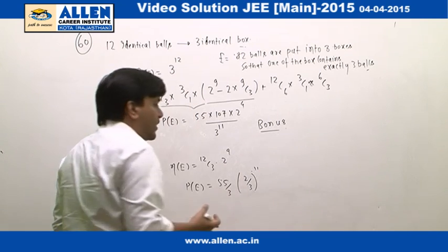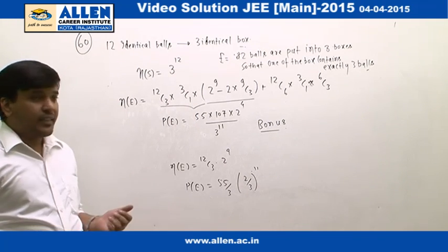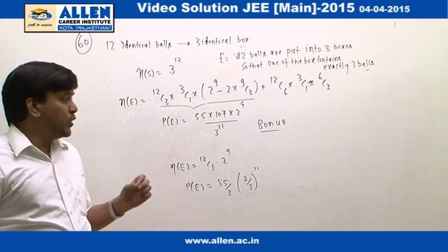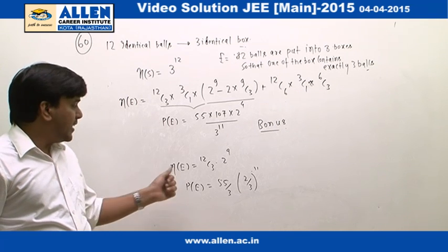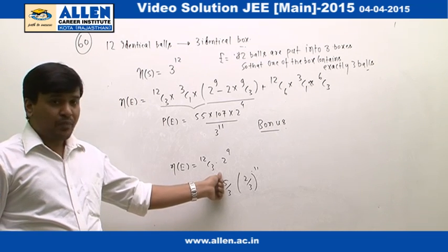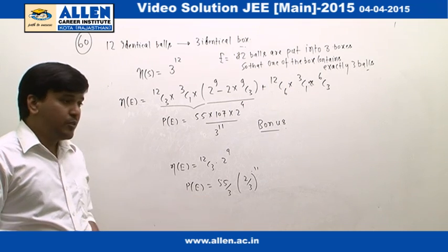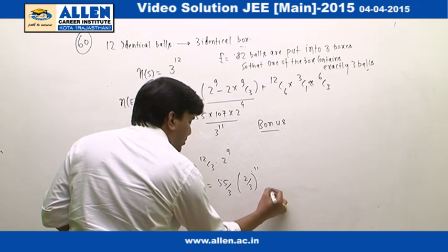But if we take the question the other way, like the 3 balls have to be put into one of the boxes, one particular box, then the number of elements is going to be this, and in that case the probability is going to be this, which is given in option 3.